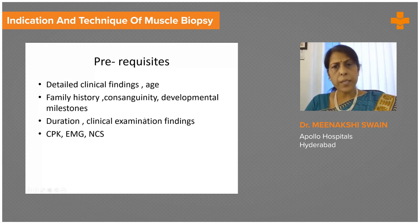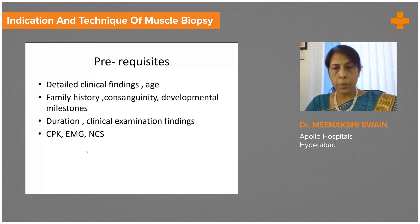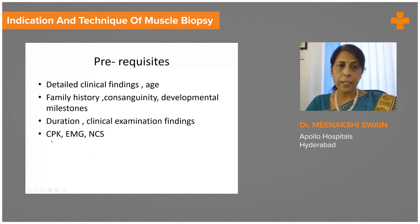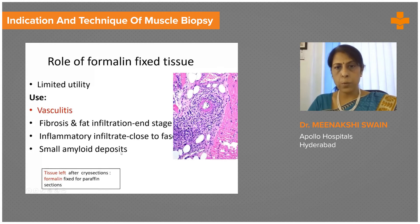An important prerequisite, especially in non-neoplastic biopsies, is to have detailed clinical findings: the age, family history, consanguinity if any, developmental milestones in a child, and the duration of symptoms — because the tempo of disease varies. Having access to other clinical findings such as CPK levels, electromyography findings, and nerve conduction studies is also helpful in narrowing down the diagnosis.